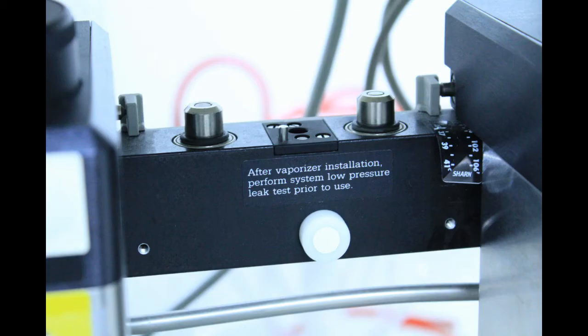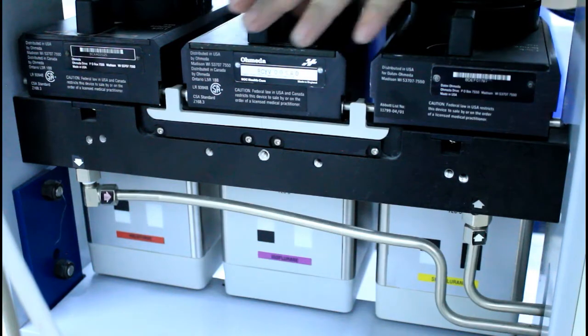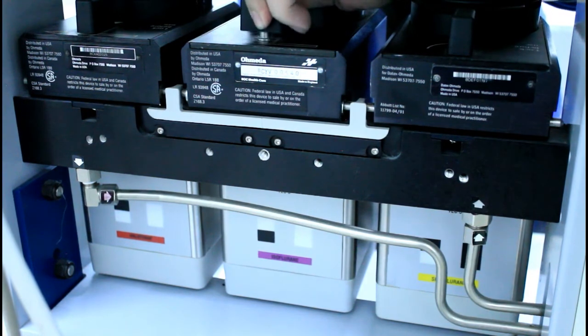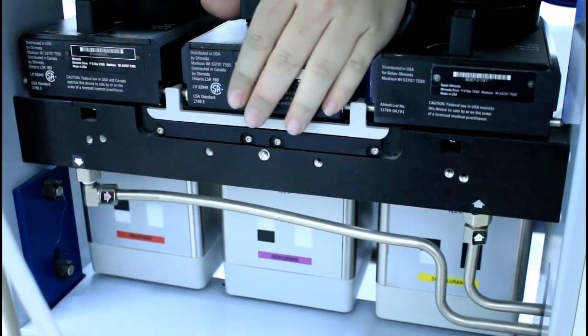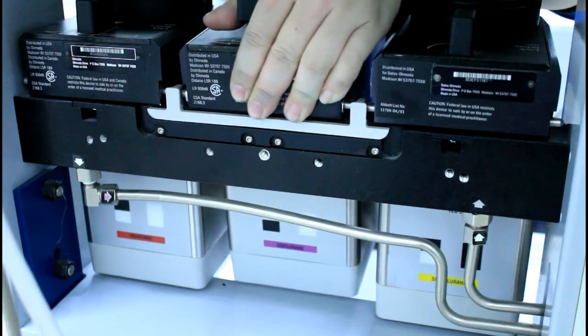The O-rings are located at the point where the vaporizer connects with the anesthesia machine to seal the connector and prevent leaks. O-rings will only be accessible when the vaporizer is removed from the anesthesia machine, which can be done by unlocking it and then lifting it off. Please note that vaporizers are heavy.